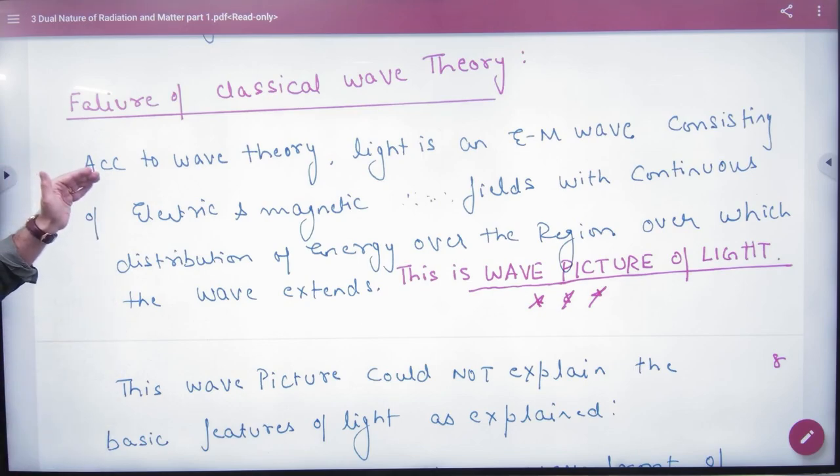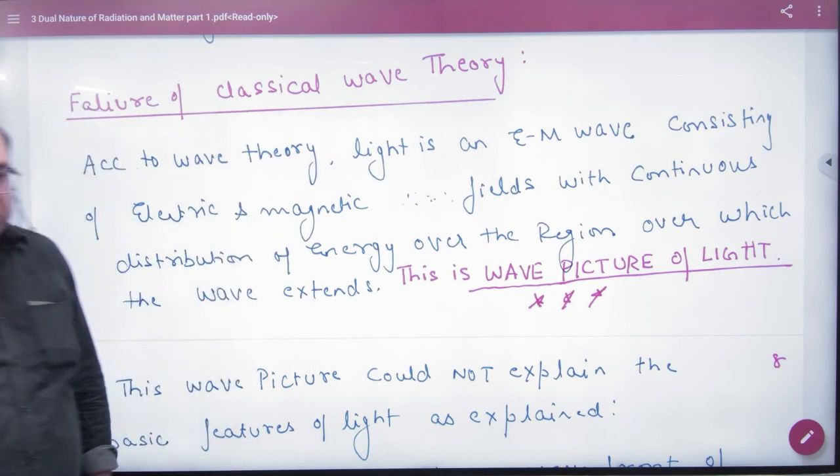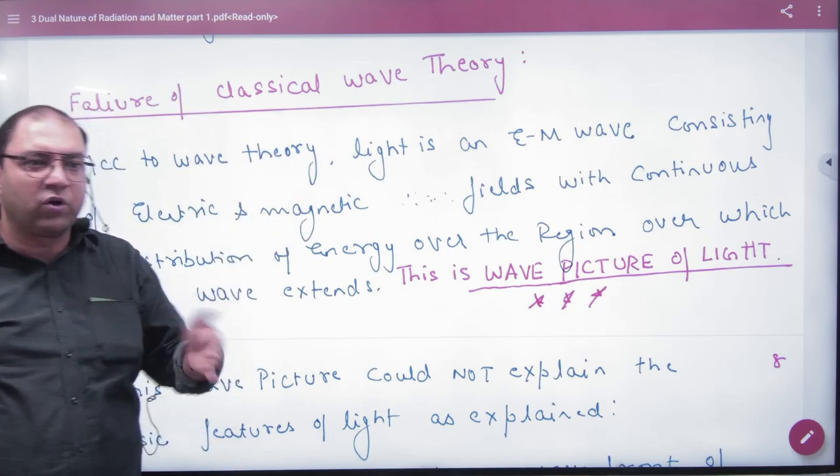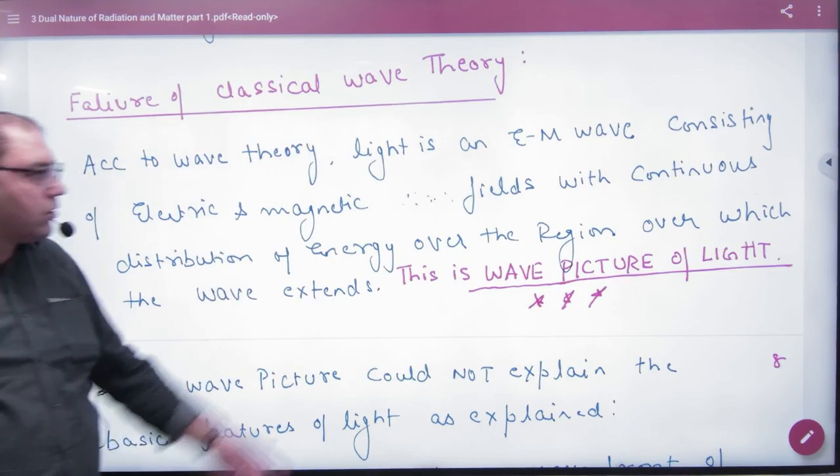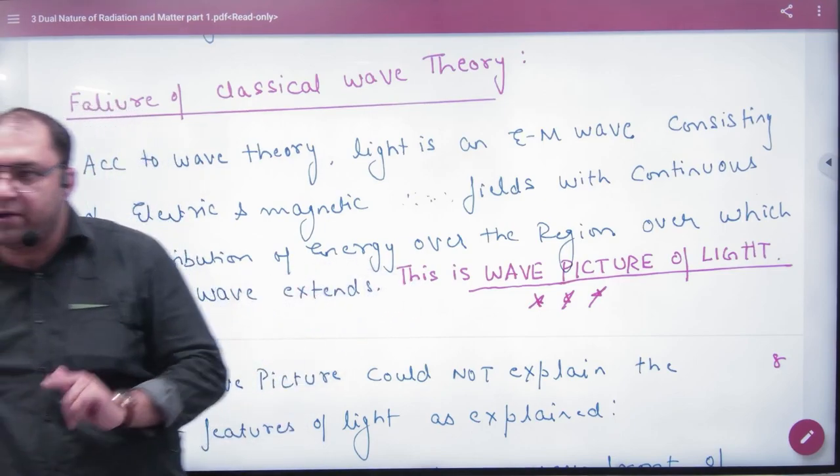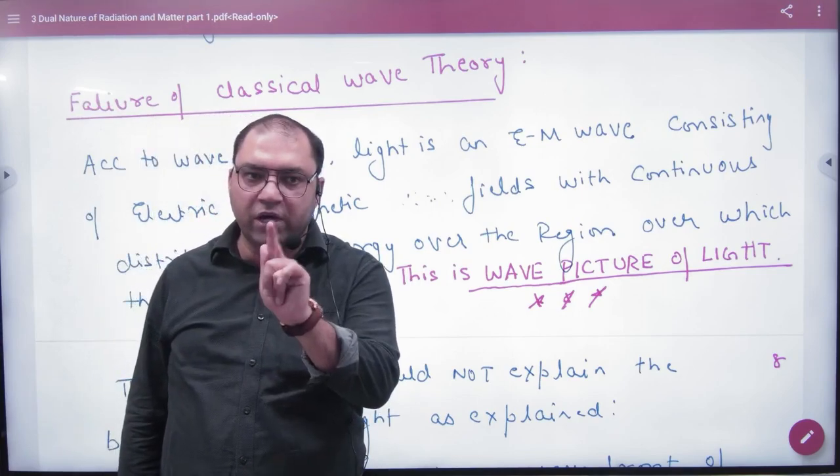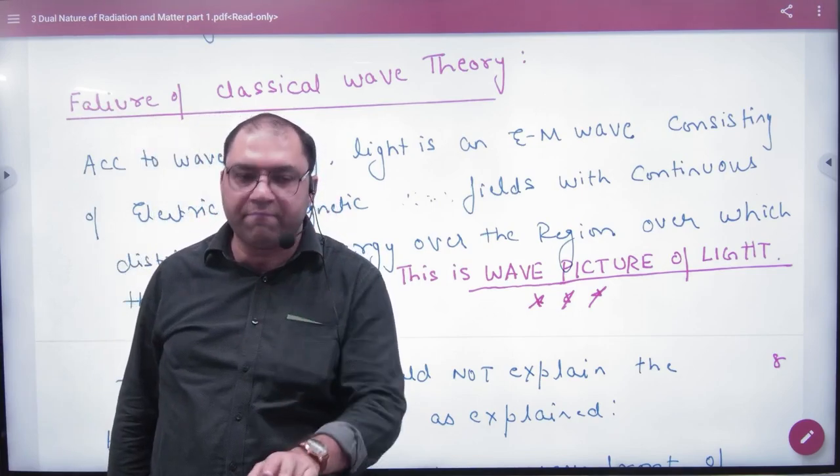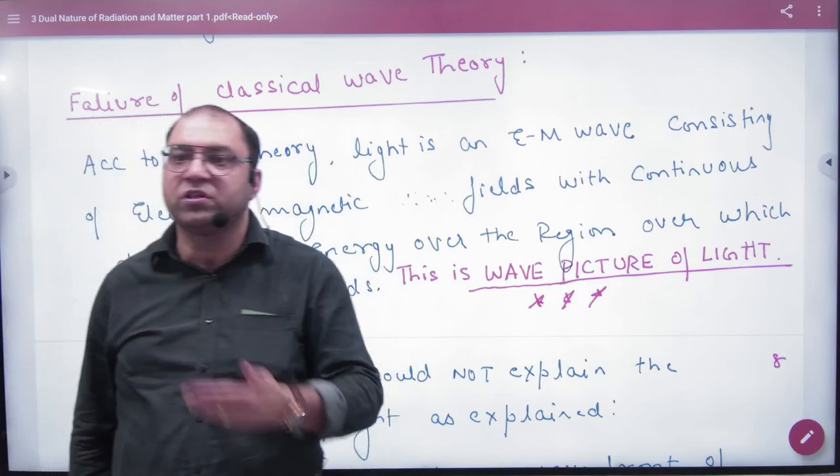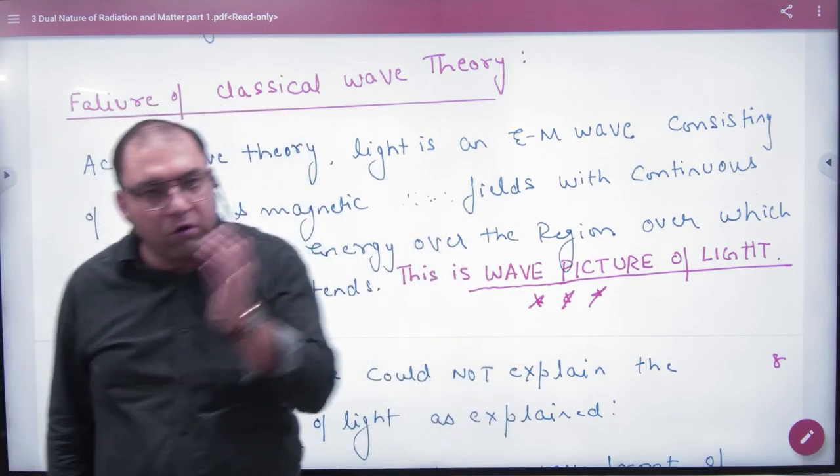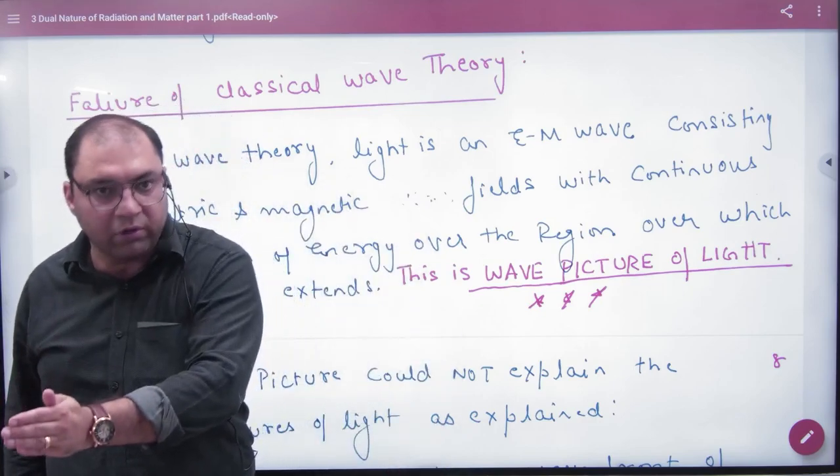light is an EM wave in which the electric and magnetic fields continuously change its value. They also change the energies. Wave picture of light - photon picture and wave picture, these two terms are very important. Wave picture means to give an explanation of wave theory, photon picture means to give an explanation of photon.